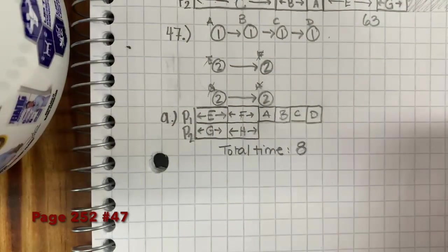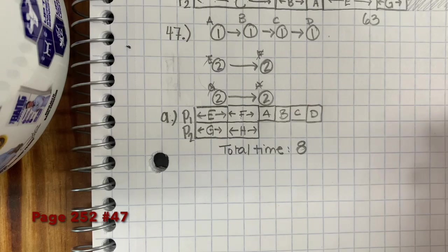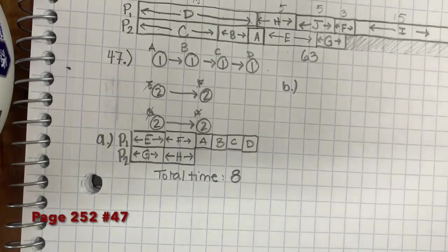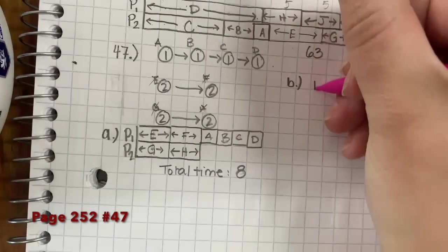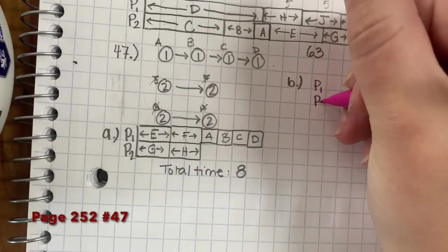For B, it says find an optimal schedule and the optimal finishing time. Okay, so for B, the optimal time, we're going to set it up again, P1, P2.